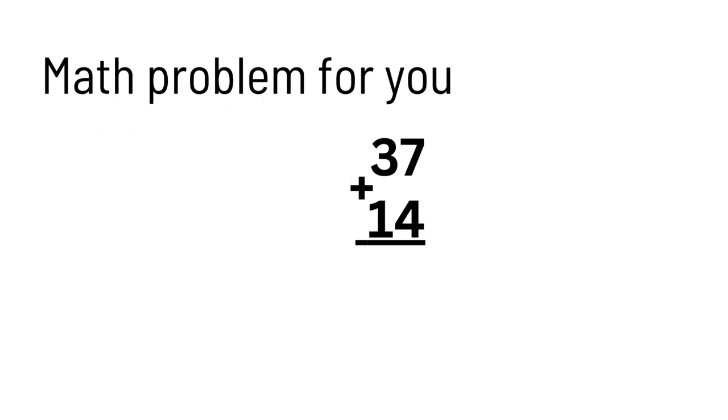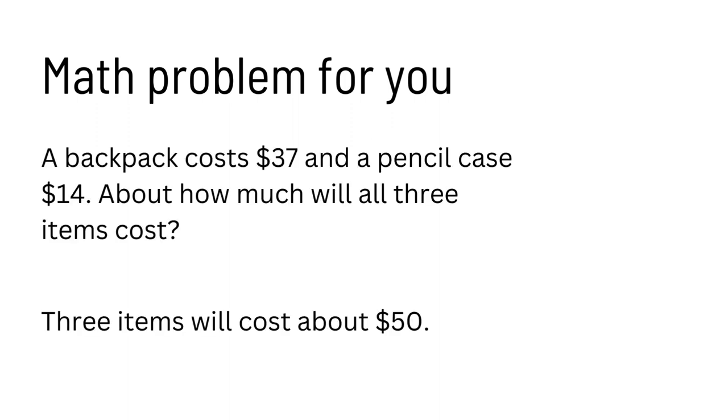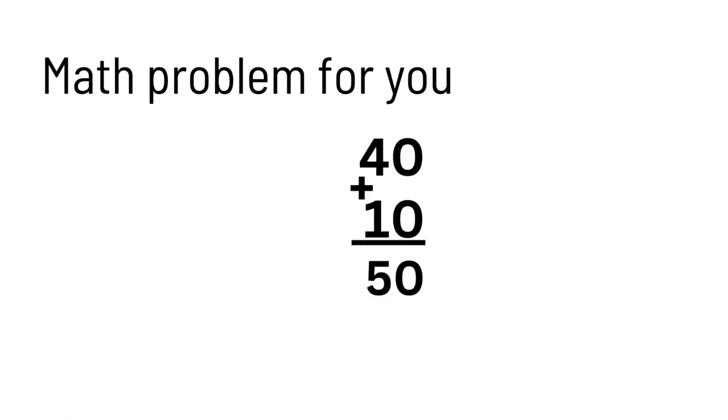First, let's round. 37 would round up to be 40, and then 14 would round down to be 10. Now we can add. 0 plus 0 is 0, 4 plus 1 is 5. Our estimate is 50. So, that means there would be $50 for it.